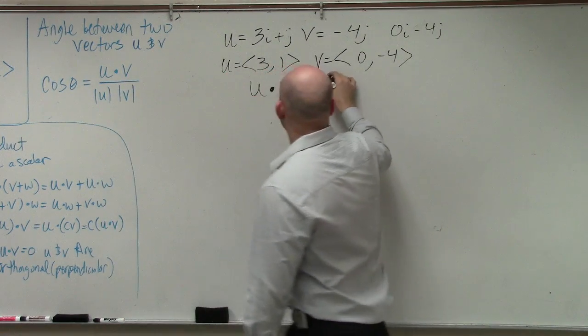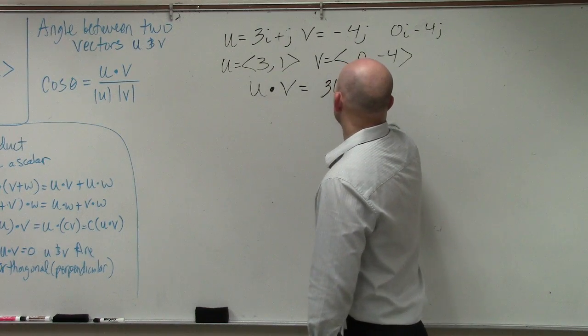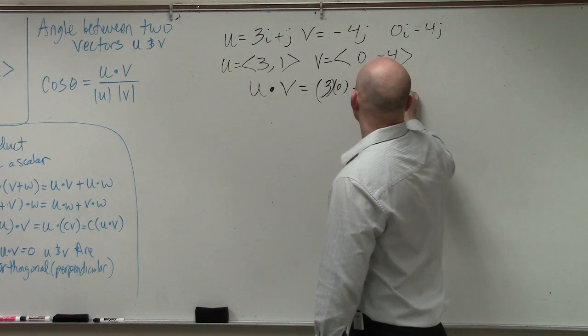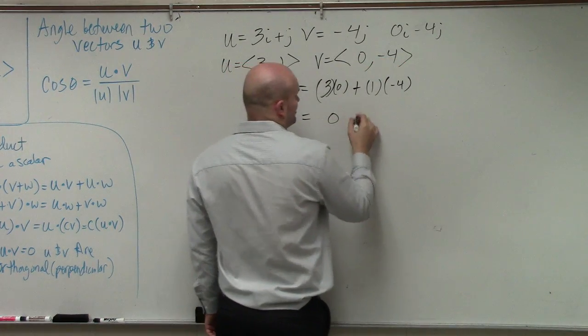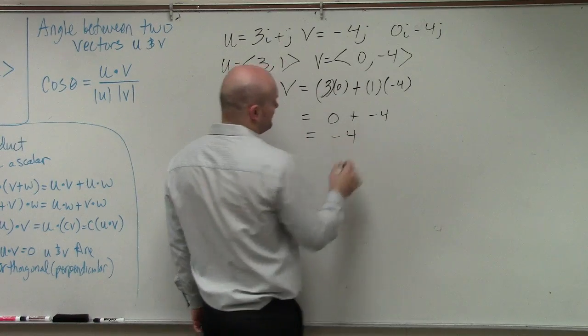That's going to be 3 times 0 plus 1 times negative 4. That's 0 plus negative 4, which equals negative 4.